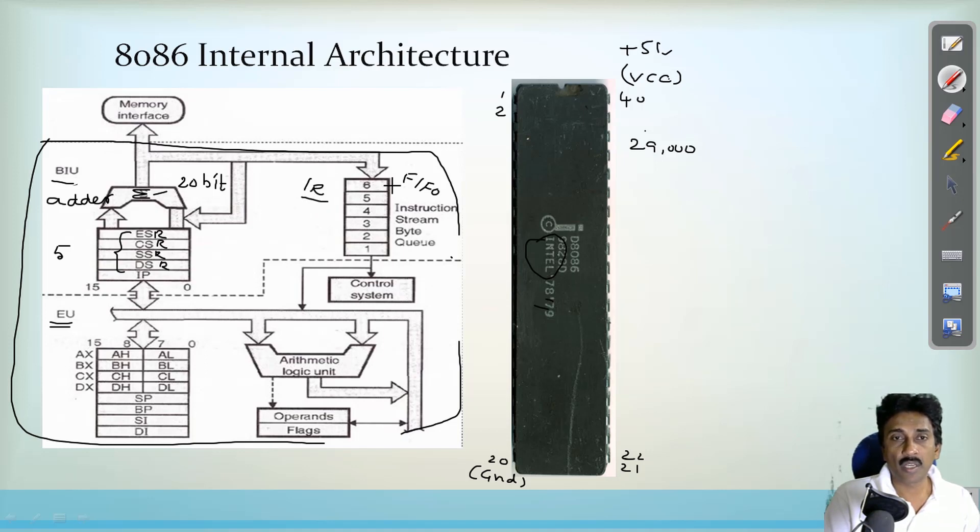So replaced by the instruction register in the 8086 microprocessor, we have a queue in the processor, particularly in bus interface unit. So six bytes long of the instructions can be stored into the queue. So the prefetched instructions are stored into the queue.